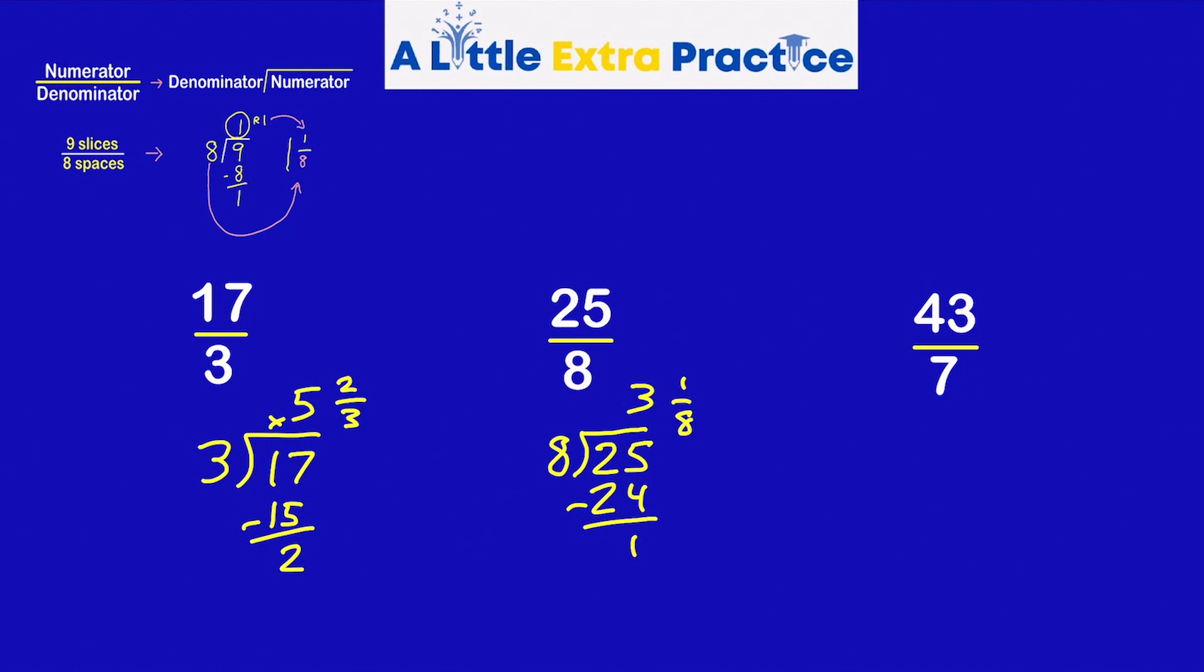43 over 7. 7 is the divisor. 7 times 6 is 42. Subtract. We get 1. So the answer is 6 and 1 seventh.